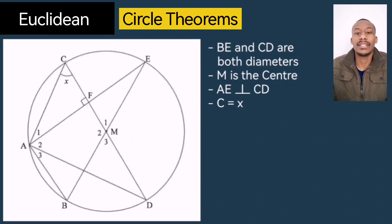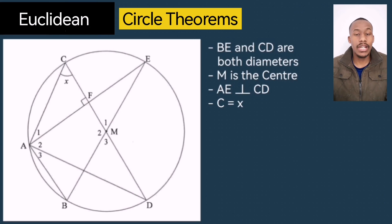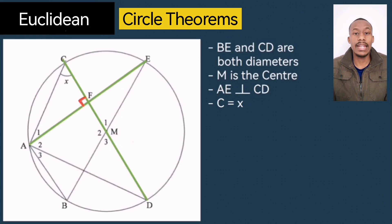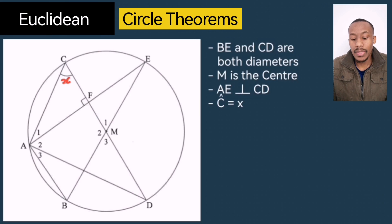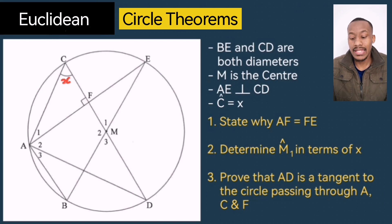Moving on to our last and final example — I challenge you to pause the video and really attempt this one on your own, maybe even take out a piece of paper and redraw the sketch. Here we have BE and CD as diameters of the circle, M is the center of the circle, AE is perpendicular to CD, and angle C equals X. There are three questions: prove that AF equals FE; determine angle M1 in terms of X; and prove that AD is a tangent to the circle passing through A, C, and F.